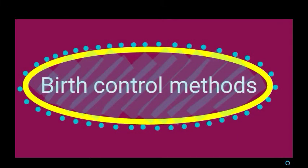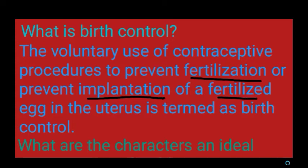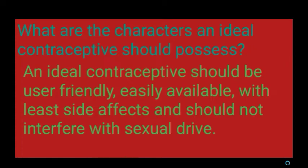Hello students. In this video we are going to learn about birth control methods. Birth control is the voluntary use of contraceptive procedures to prevent fertilization or prevent implantation of a fertilized egg in the uterus.